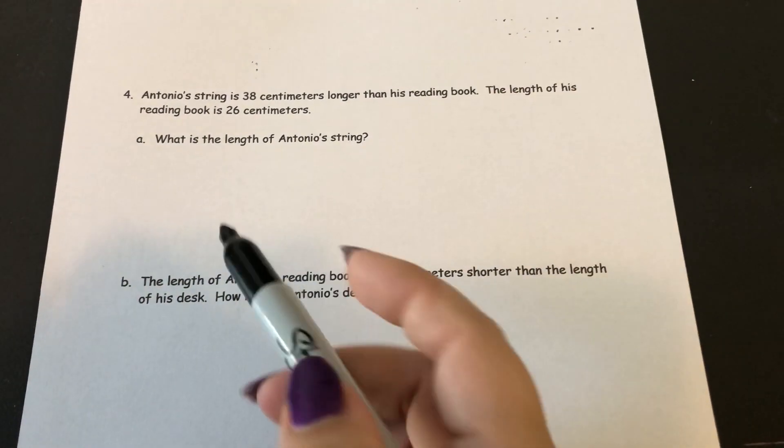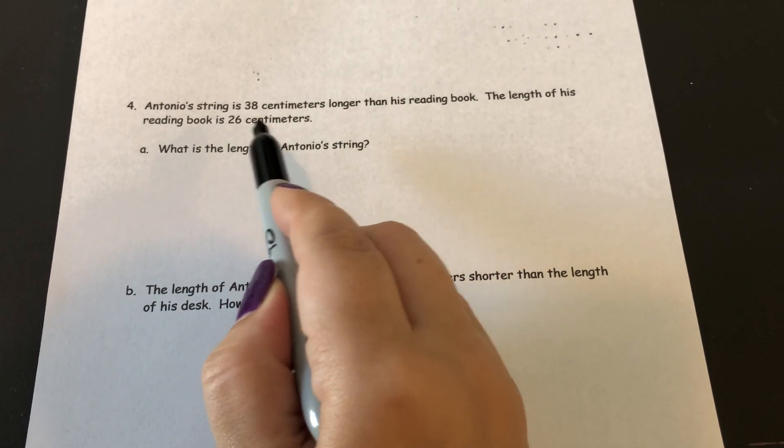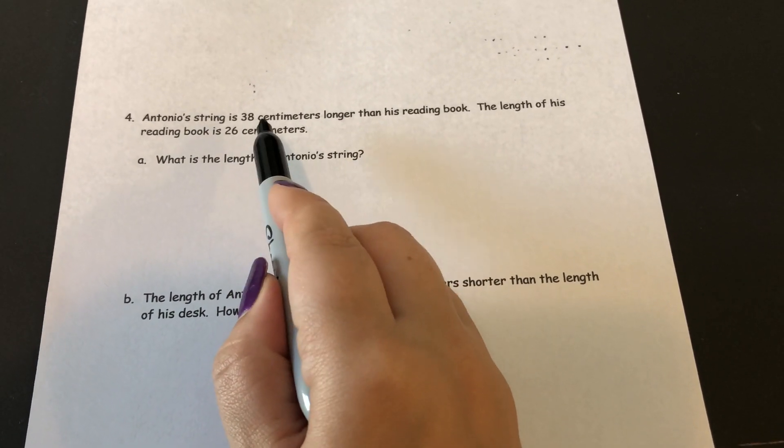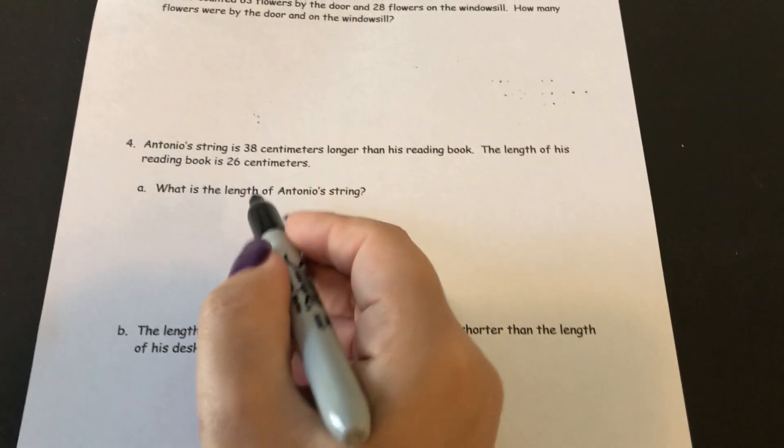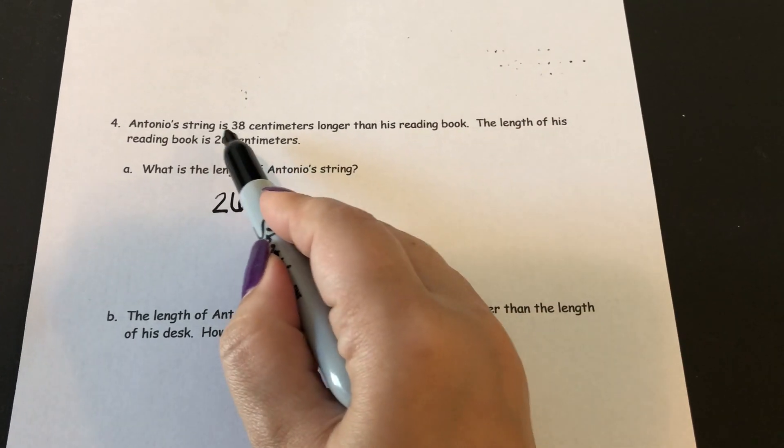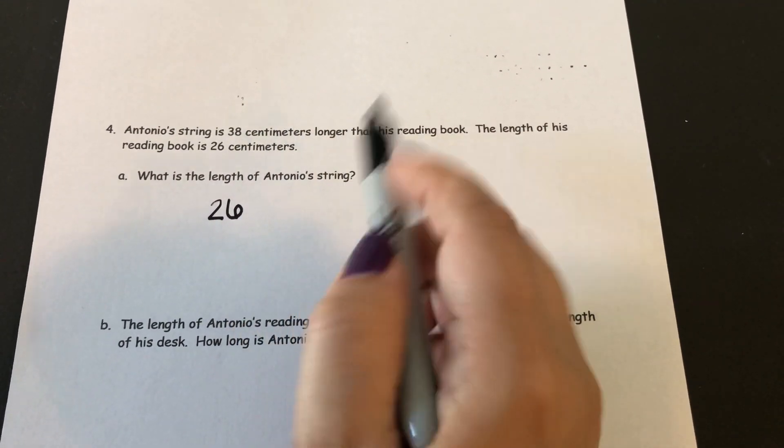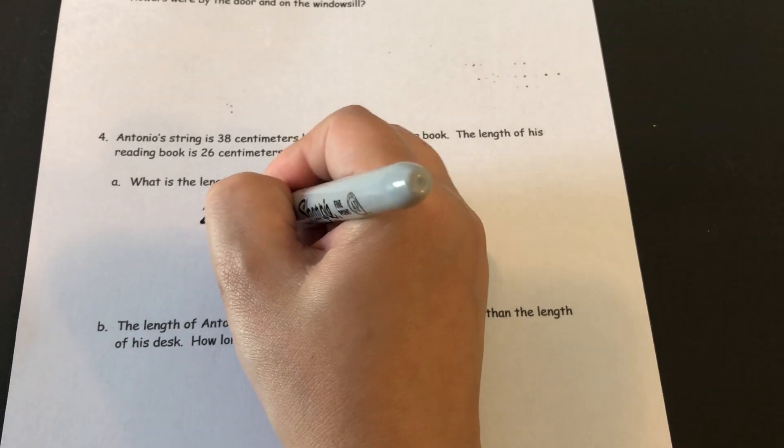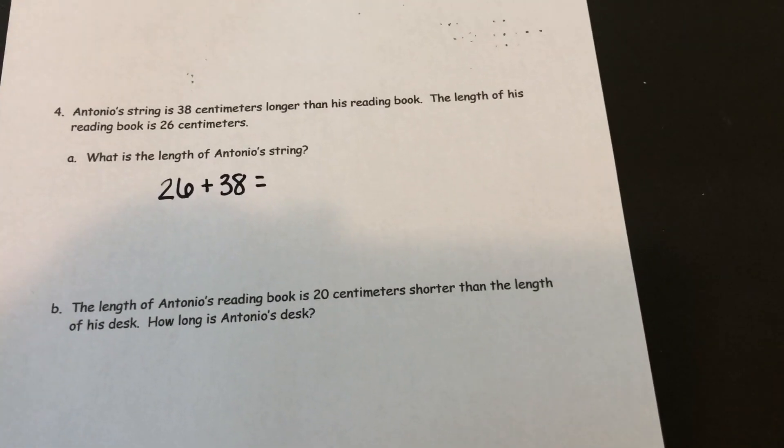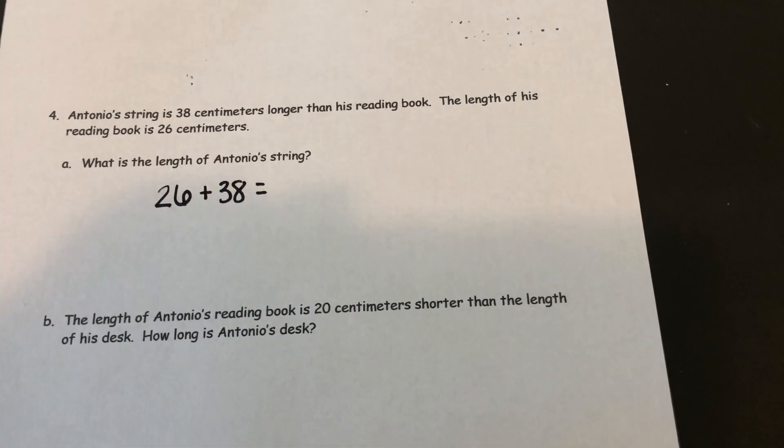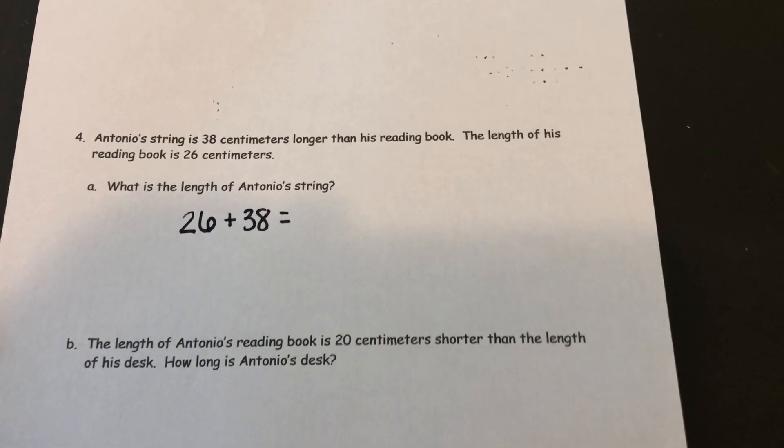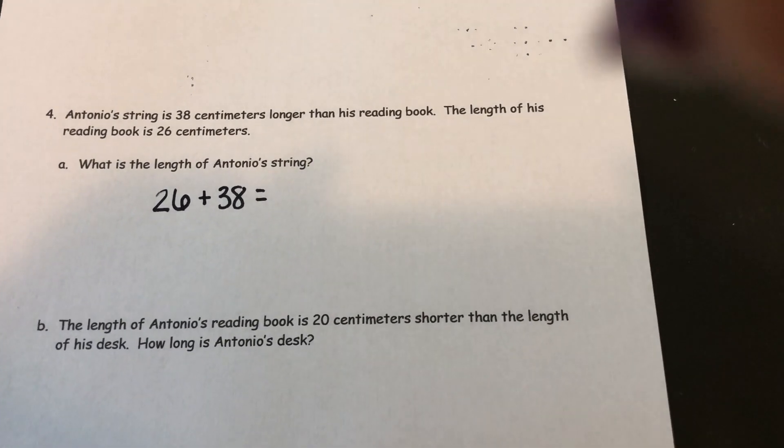I know that his book is 26 centimeters and it says that the string is 38 centimeters longer than the book. So if his book is 26 centimeters and his string is going to be 38 centimeters longer, I need to add 38 to it. My first try is I'm going to try to add like units. 8 ones and 6 ones. That's going to give me a two-digit number so I can't use that strategy.